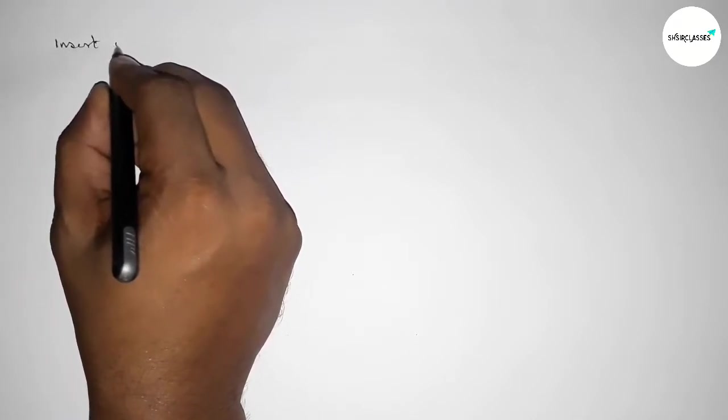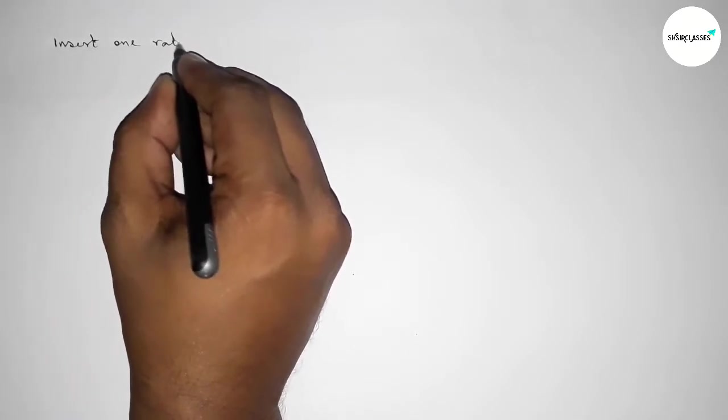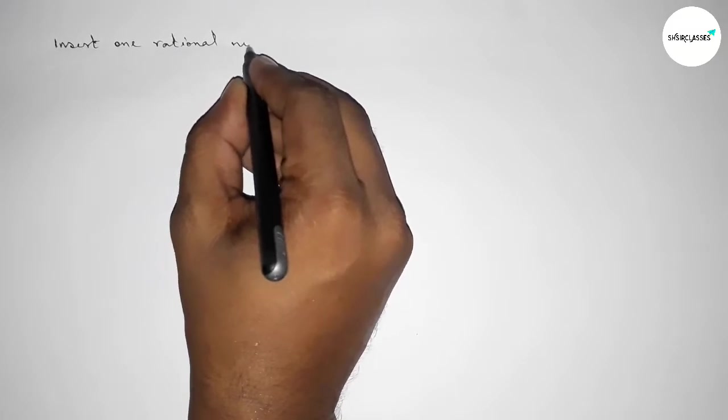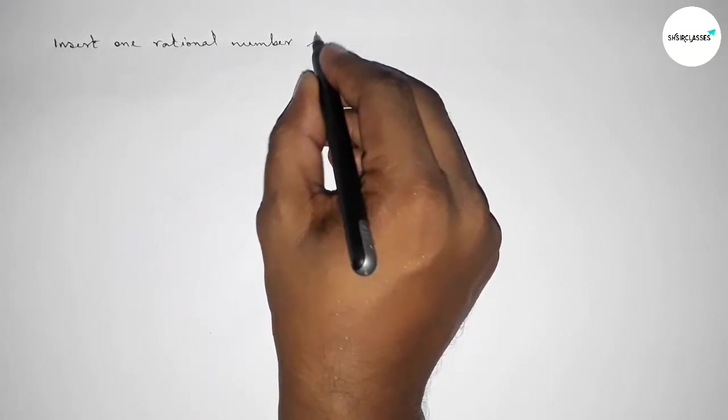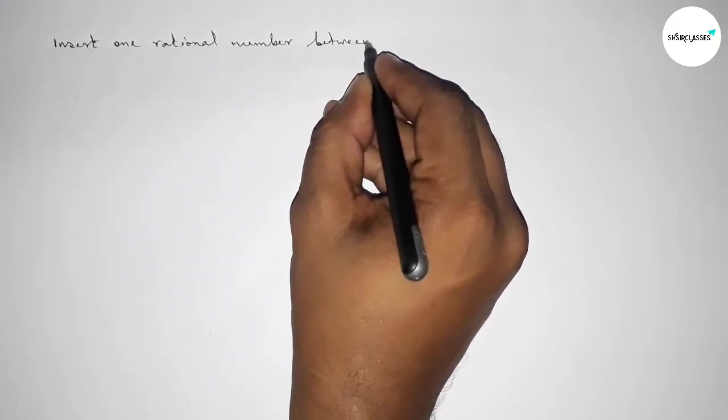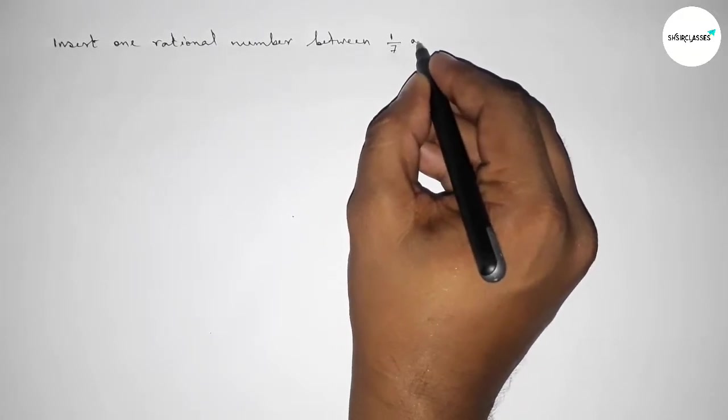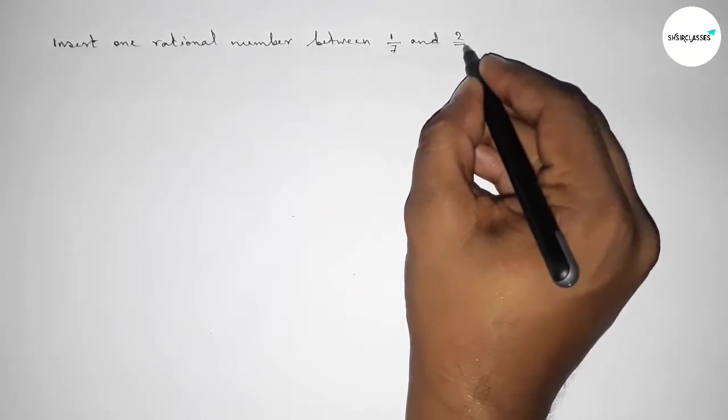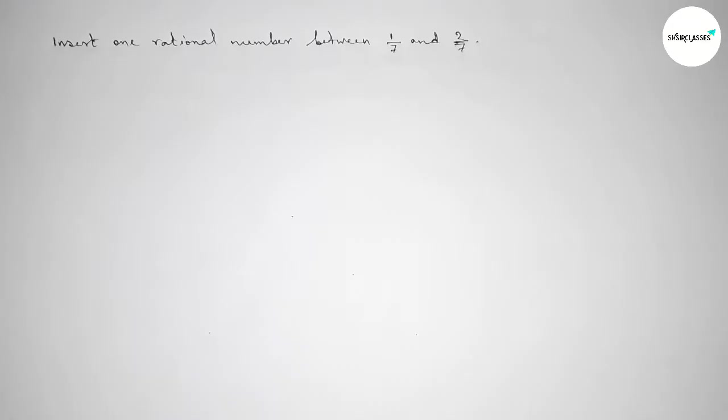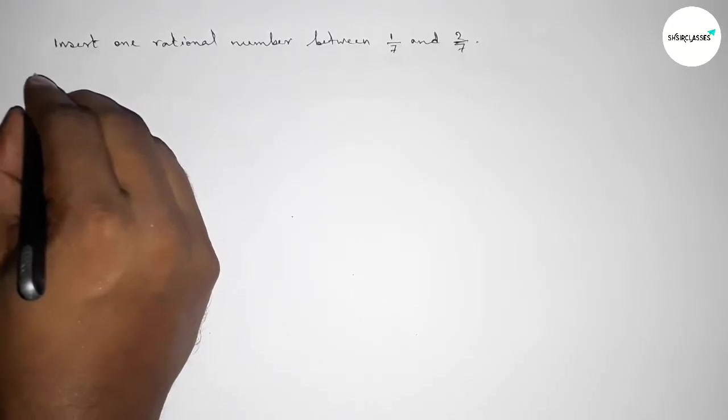Hi everyone, welcome to SI Share Classes. Today in this video we have to find one rational number between 1/7 and 2/7 in an easy way. So let's start the video and solve this problem.